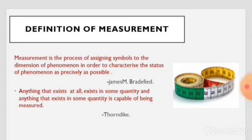Thorndike also gave a definition. Thorndike said: anything that exists at all exists in some quantity, and anything that exists in some quantity is capable of being measured.